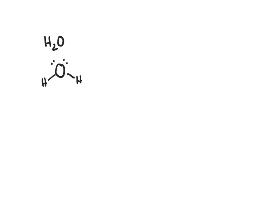We can write the Lewis structure for phosphorus pentafluoride, knowing that phosphorus is the least electronegative atom, and that our fluorides are going to be connected to that phosphorus atom, and I need five of them. If I count the number of electrons, I'll see that I need three lone pairs on each of the fluorines. And that's my Lewis structure for phosphorus pentafluoride.